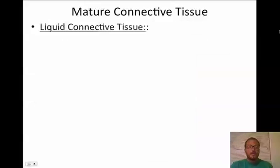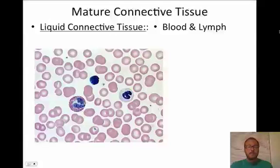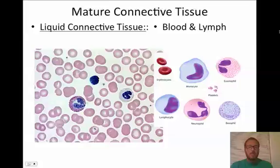Our last type of mature connective tissue is liquid connective tissue — blood and lymph. Lymph is essentially plasma that leaks out of tissue and gets recollected in the lymphatic system. Blood you should recognize easily: we have red blood cells and white blood cells. You won't be asked to distinguish between monocytes, eosinophils, neutrophils, or basophils — just recognize blood cells.